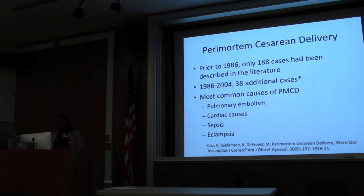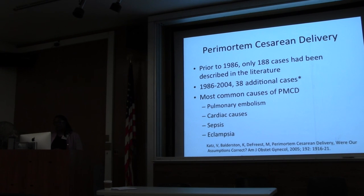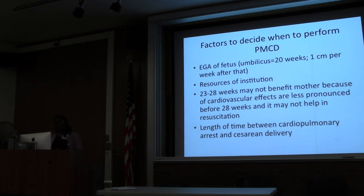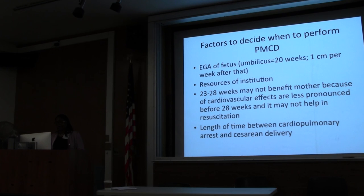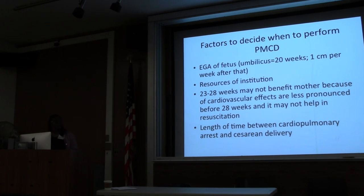Perimortem cesarean deliveries — prior to 1986, there were only 188 cases described. Another study from 1986 to 2004 provided 38 additional cases. The most common causes of perimortem cesarean delivery are pulmonary embolism, cardiac causes, sepsis, and eclampsia. We wouldn't want to perform one if the fetus is below the umbilicus because the baby will not survive. As a general rule, 23 weeks is about when we would consider a baby to be periviable, and for the best outcomes probably about 24 weeks.